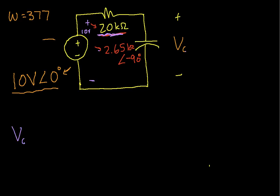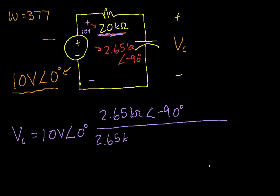So we have V sub c is 10 volts at an angle of zero times 2.65 k ohms at an angle of minus 90 degrees over 2.65 k ohms at an angle of minus 90 plus 20 k ohms. So I have the impedance of the element that I'm getting the voltage across divided by the sum of the impedances.